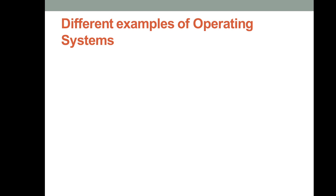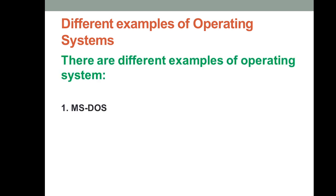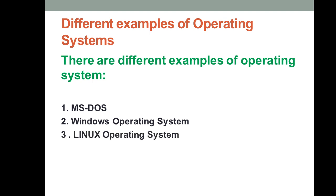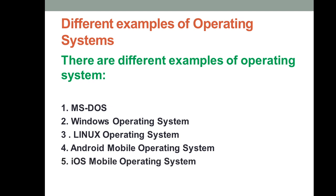Different examples of operating systems include MS-DOS, which is one command-based operating system; Windows operating system, which is a graphical user interface system; Linux operating system, which is a secure operating system with high security features; Android mobile operating system, used in touchscreen phones; and iOS mobile operating system, designed for Apple devices like Apple phones and laptops.